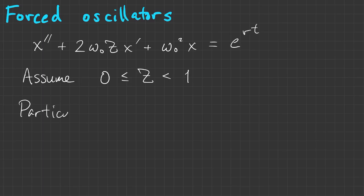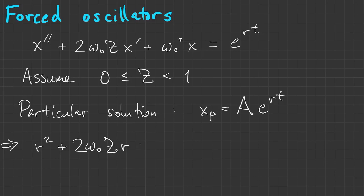From undetermined coefficients, we know the particular solution has to be in the form of a constant times e to the rt. When we put that into the equation, each derivative is a factor of r. That's very easy to solve for the constant a, which is constant but depends on what the rate r is.